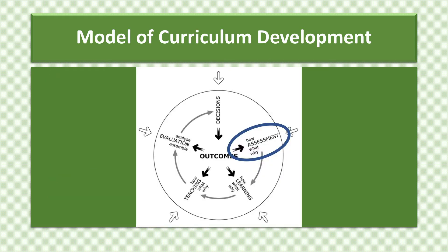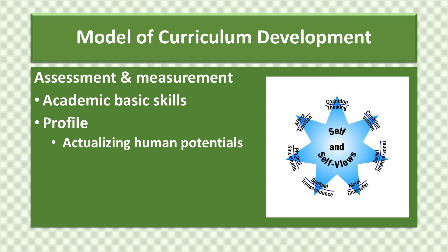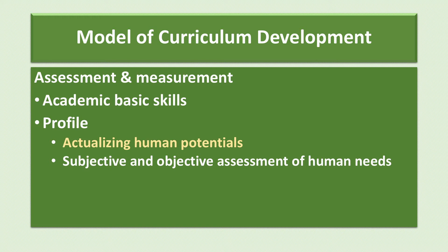Stephanie advocates assessment of the desired outcome as the next step in the process. Without some ideas about how results will be considered, it is impossible to ascertain whether the desired outcomes have actually been achieved. Assessment means that some data have been collected, while measurement indicates that data consists of numbers that can be statistically analyzed. This is one reason academic basic skills will continue to be emphasized — they are important for the digital information age and are readily easy to measure. However, it is possible to compile a profile of artifacts demonstrating the actualizing of human potentials such as critical and creative thinking, social and emotional skills, and self-efficacy beliefs. It is also possible to assess human needs such as well-being and positive emotions, and to assess one's ability to create and use technology through actual products, such as those made in maker labs.